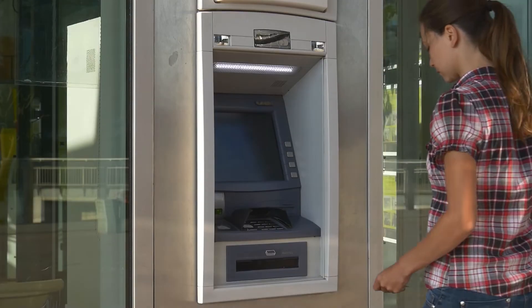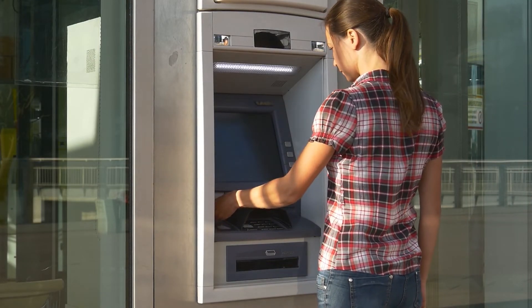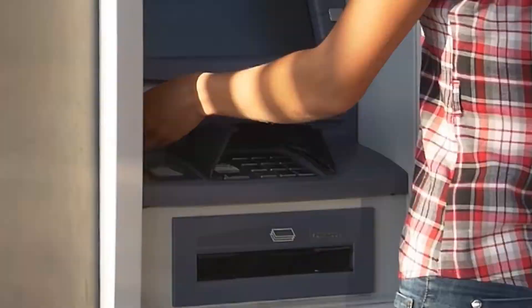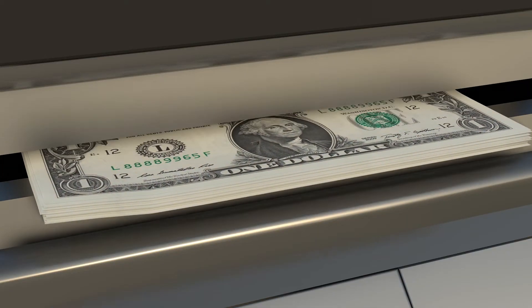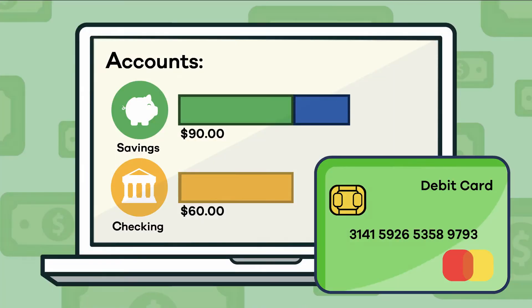You can even head over to the ATM with your debit card and get some cash from that magic machine — if you have money in your account, of course. When you use a debit card, the amount you spend is taken immediately out of your checking account.